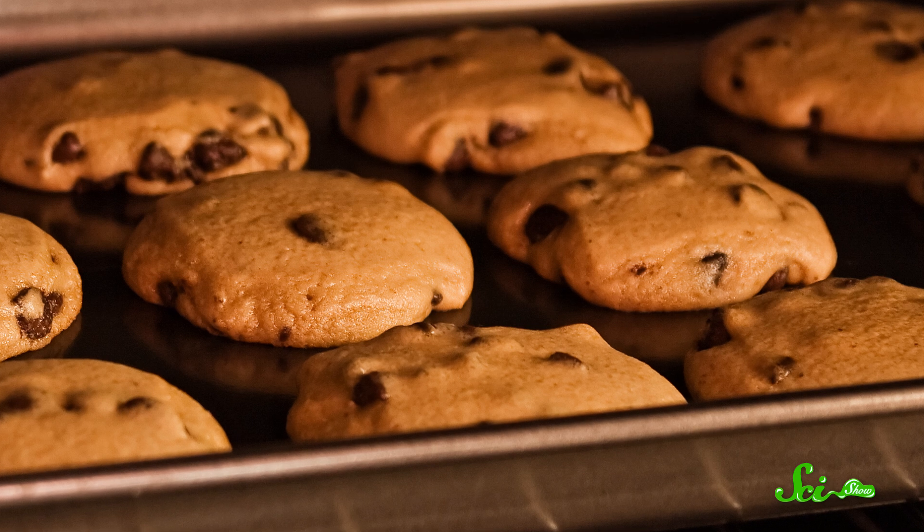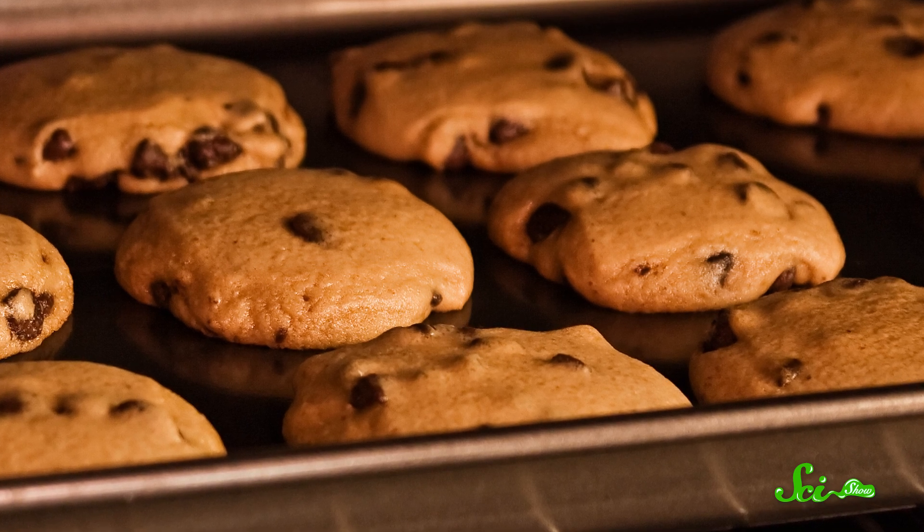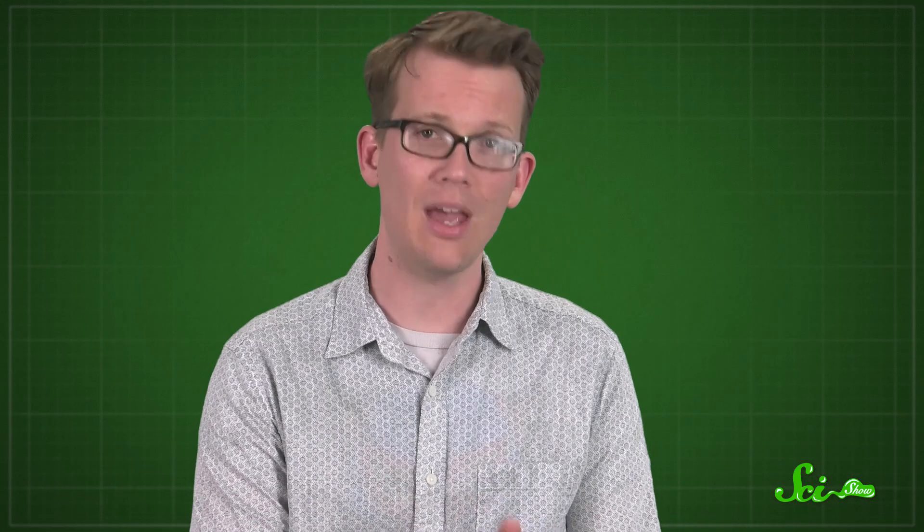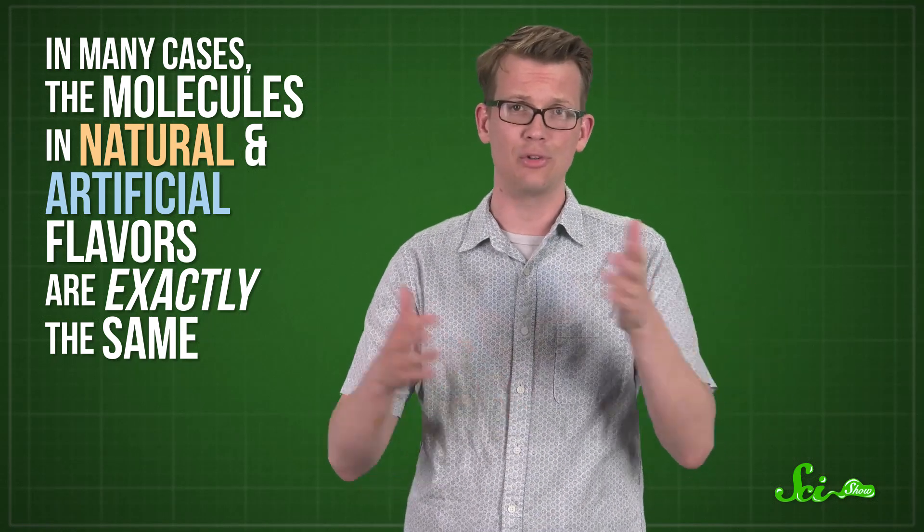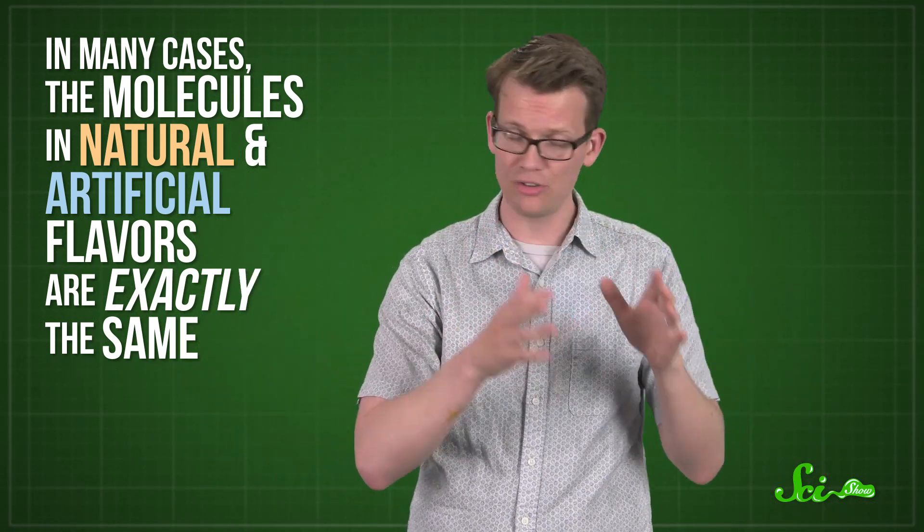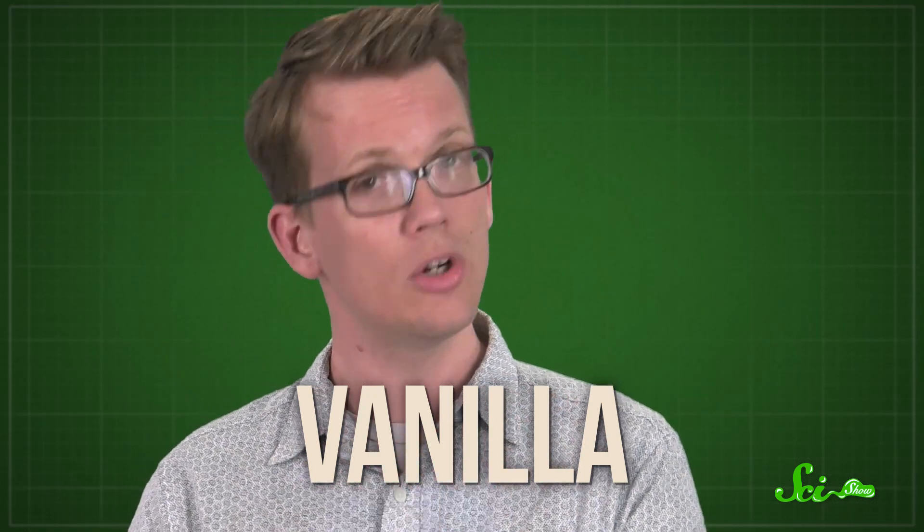Because what makes your favorite chocolate chip cookie so delicious comes down to the molecules you taste and smell, not where those molecules come from. They're chemicals, whether they come from natural sources or are made from scratch in a lab. And in many cases, the molecules in natural and artificial flavors are exactly the same, down to the placement of each atom and bond. That's because for a lot of common flavors, we know the main chemical behind them. And whether you purify it from fruit or make it synthetically, a compound is a compound is a compound.